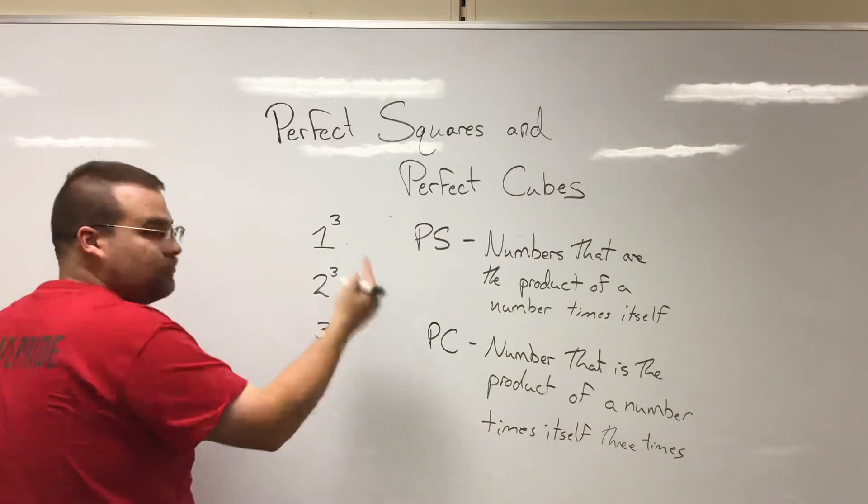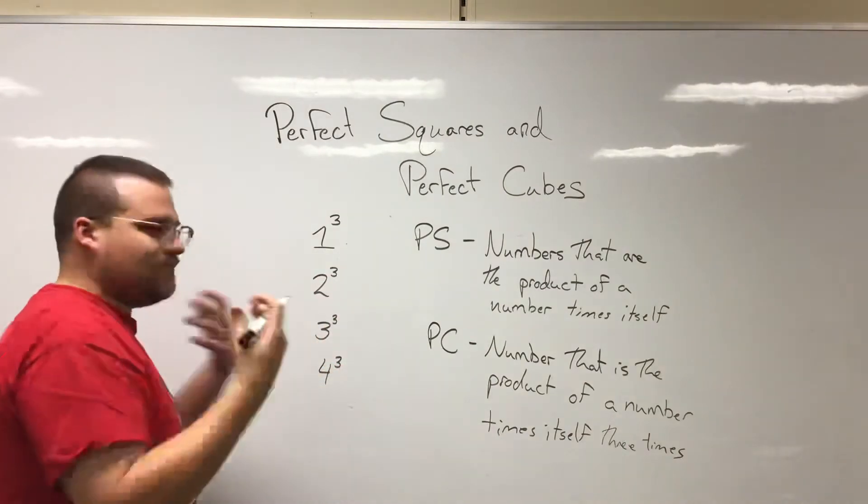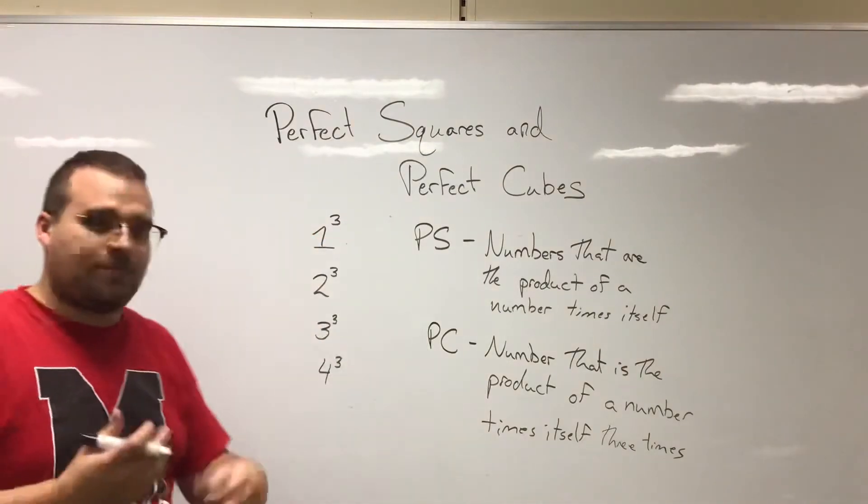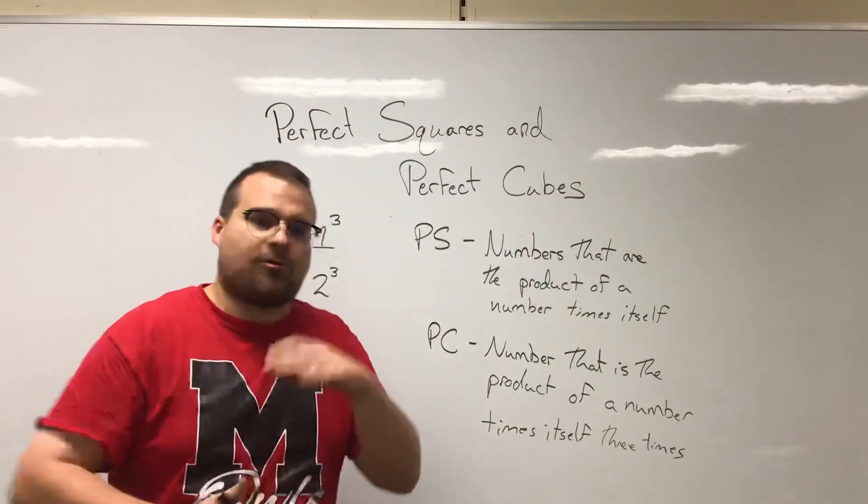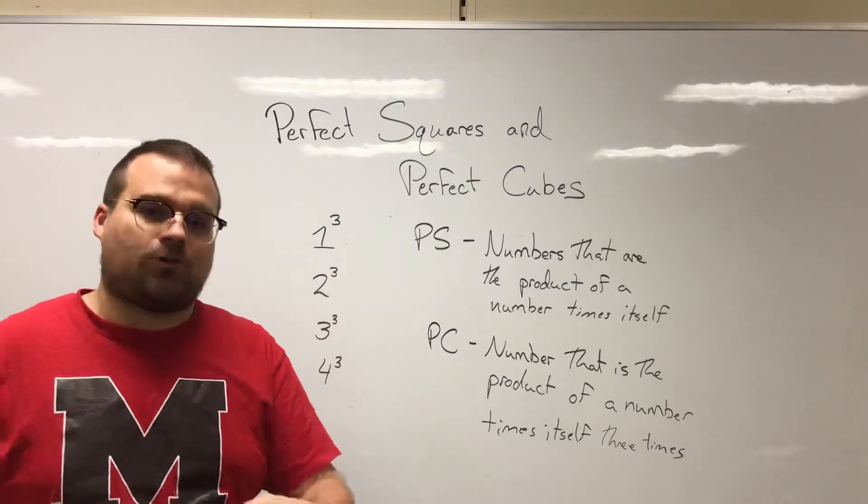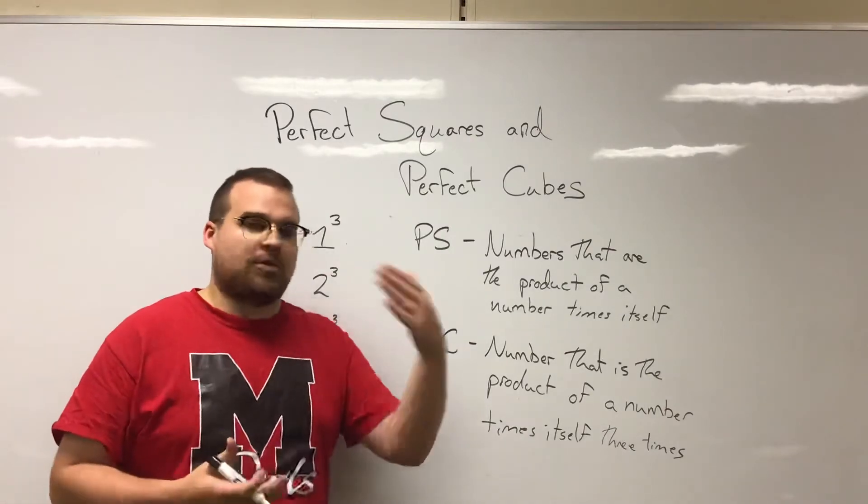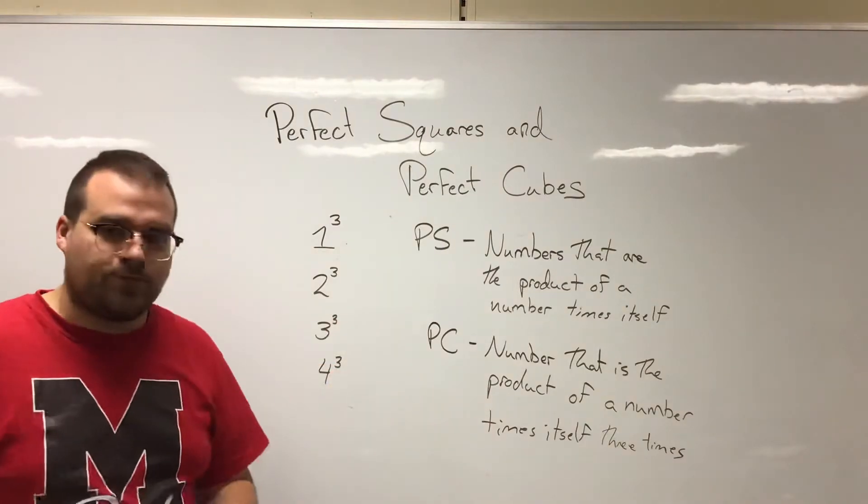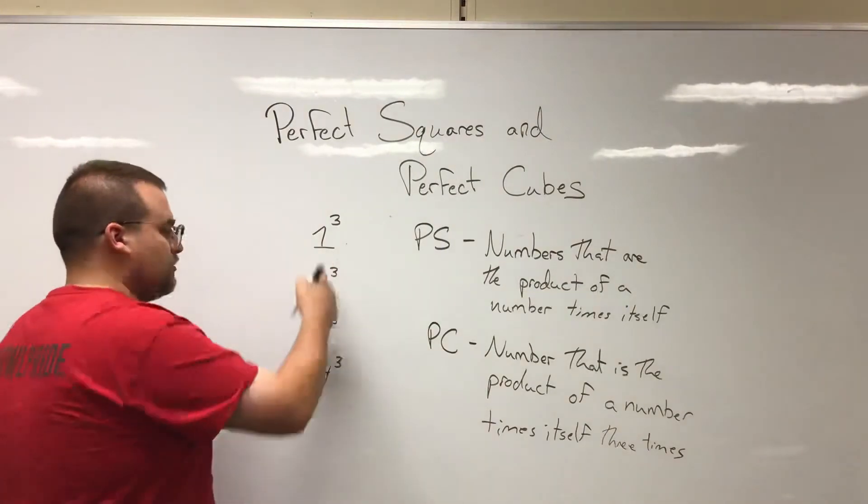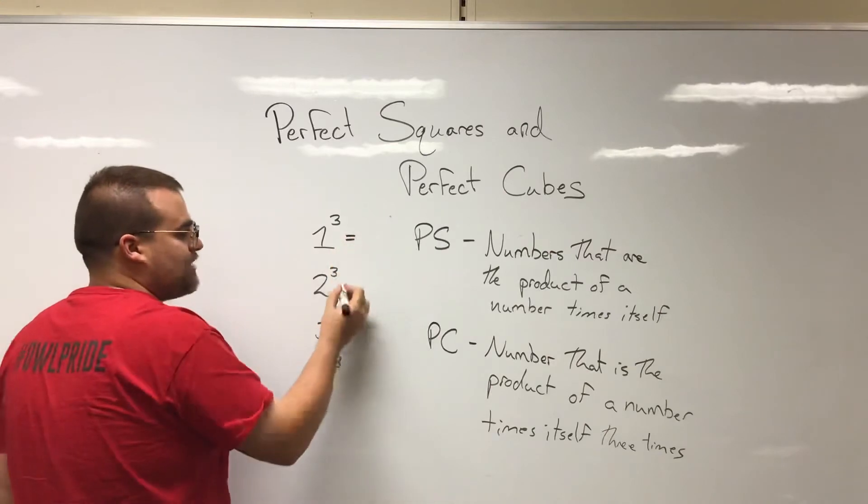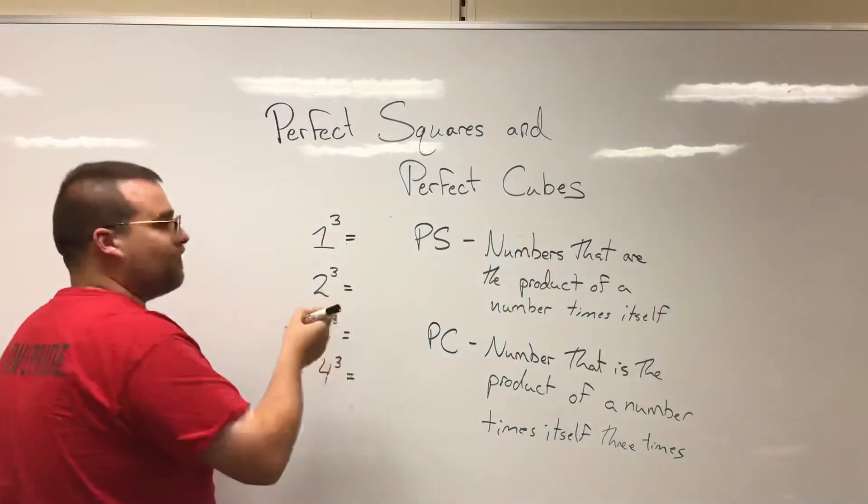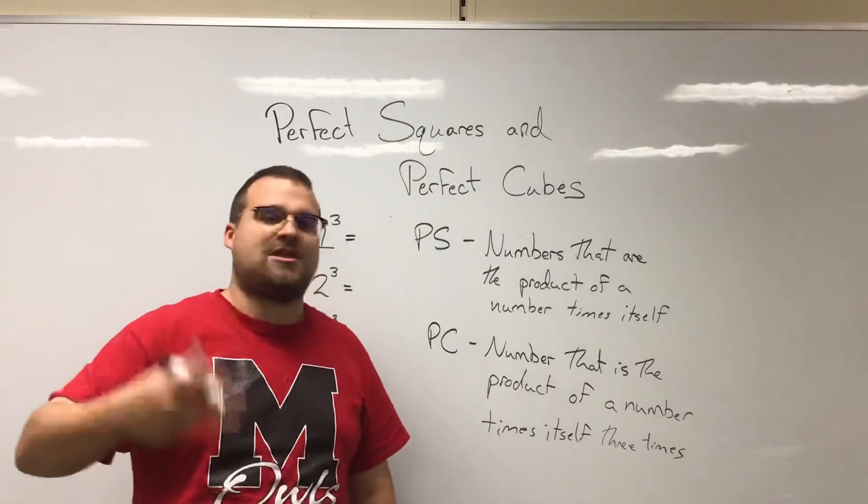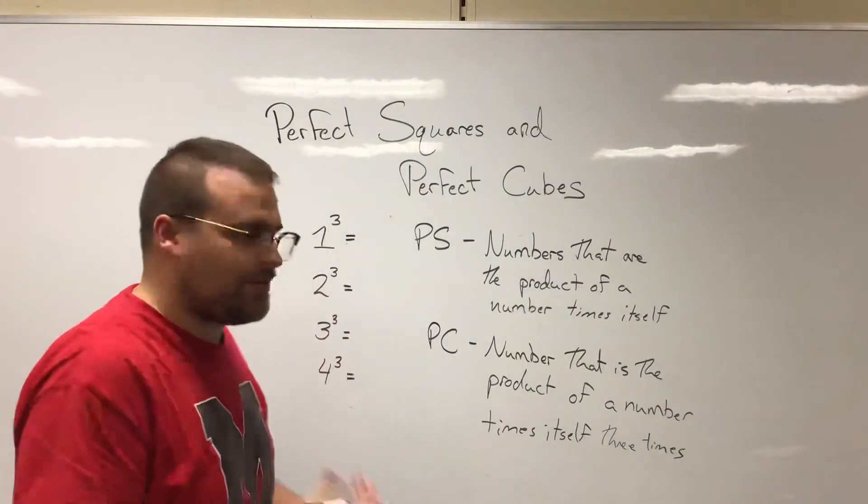Two times two times two, or three times three times three. This is what we tend to call a number cubed. A number to the third power - it's a synonym we use - is a number cubed. So this would be three cubed or four cubed. And the answers to these, the base numbers with their exponents, are perfect cubes - numbers that could be split up into three equal factors, or three identical factors.